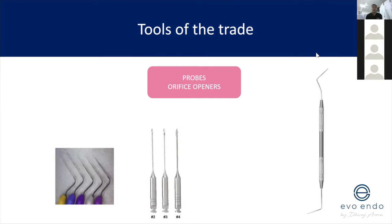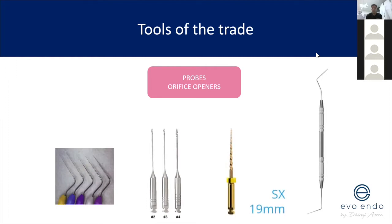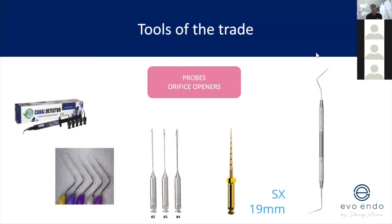Probes and orifice openers: the DG16 probe is a sharp-ended probe that is amazing at locating canals. You can also get probes with the equivalent of a hand file attached — those are useful for really difficult access cases. For orifice openers, I'm more inclined to preserve pericervical dentine, so I don't commonly use them. Most of you at university would be aware of Gates Glidden burs. The SX bur from Dentsply Sirona is the orifice opener routinely used by quite a few endodontists, but I think we're moving away from large tapered preparations toward more conservative preparations with enhanced irrigation.